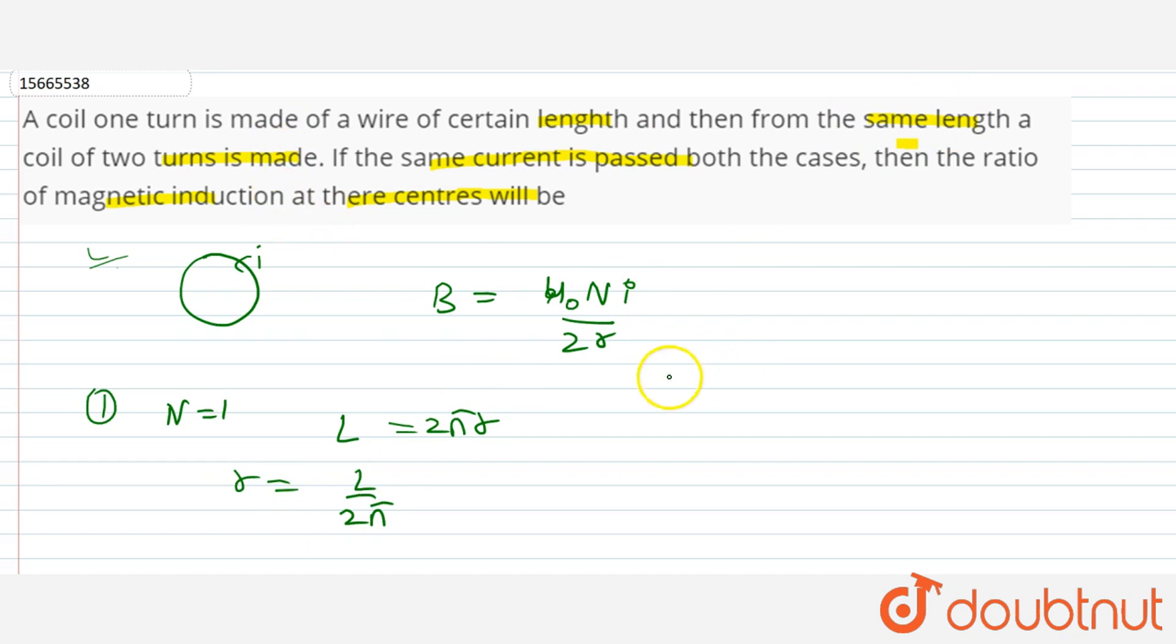Now, we have the same length. This is the wire, which is the length L, which has 2 turns. If we have 2 turns, then we have the same length. Each turn has circumference of L by 2. So, L by 2 is equal to 2πr.